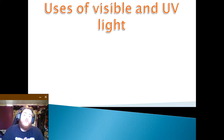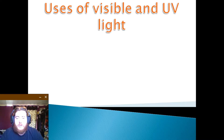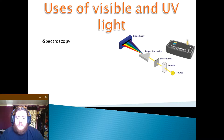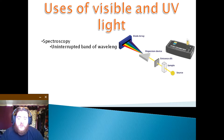Moving on to the applications of visible light and ultraviolet light within a crime scene investigation context. First of all, I am going to look at spectroscopy. Spectroscopy: white light from a continuous source of electromagnetic radiation will produce an uninterrupted band of wavelengths. Individual chemical elements, however, will produce specific discrete wavelengths based on arrangements of electrons around the nucleus of their atom.